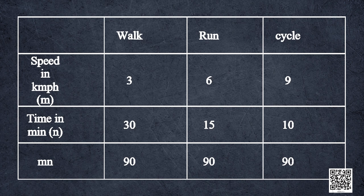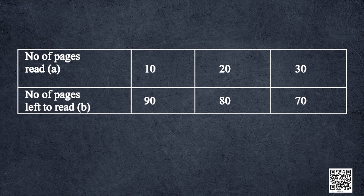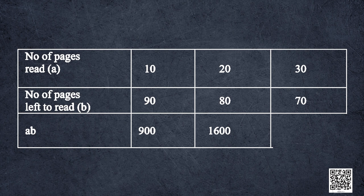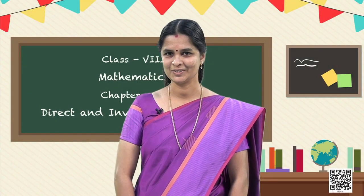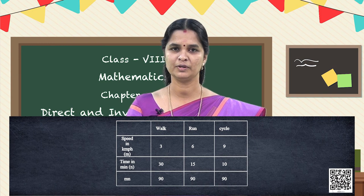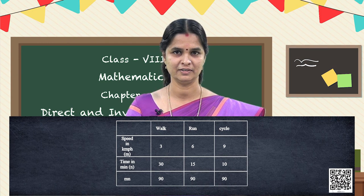Similarly, in situation 2, let us take the number of pages read as A and the number of pages left to read as B. In the first column it is 10 into 90, that is 900. Second one, 20 into 80, that is 1600. And in the third column, 30 into 70, that is 2100. So the product A times B is not constant. In situation 1, the product MN was the same — it was constant throughout. But in situation 2, it is not the same.